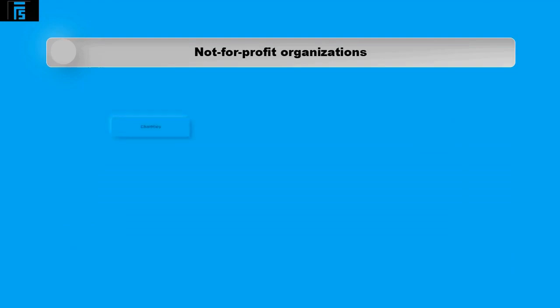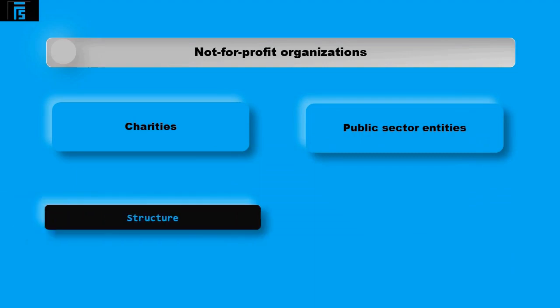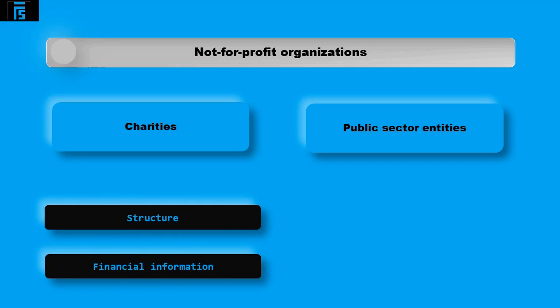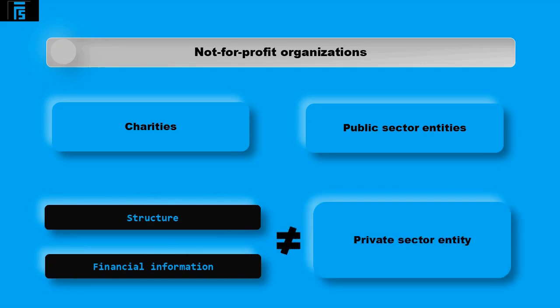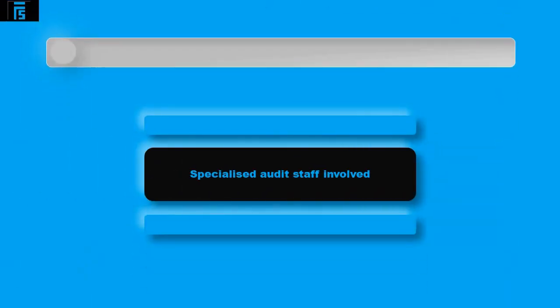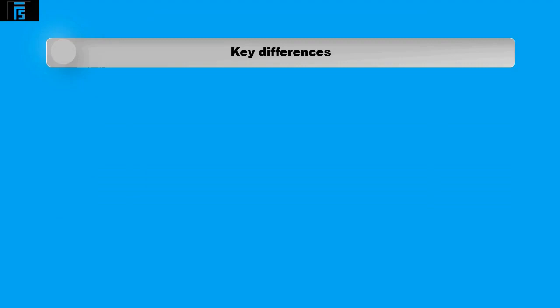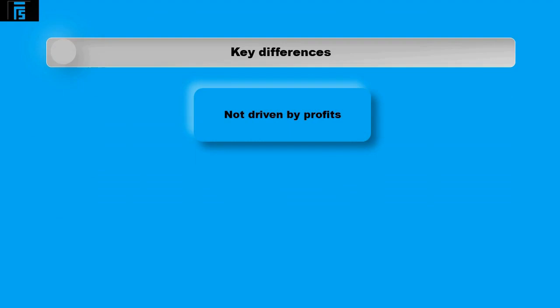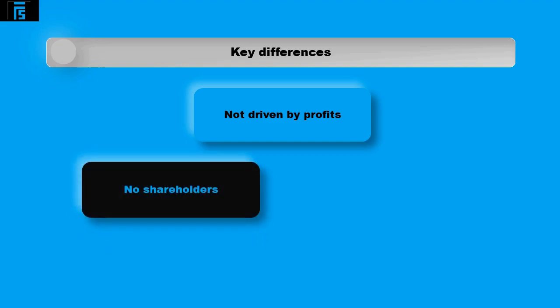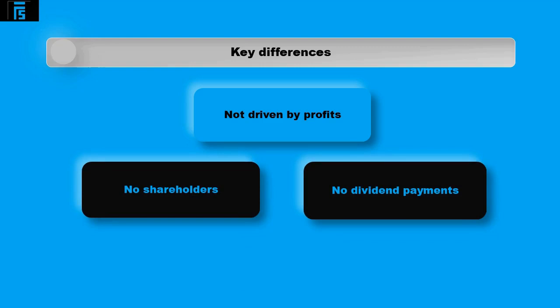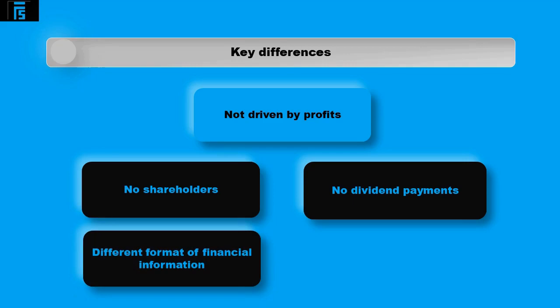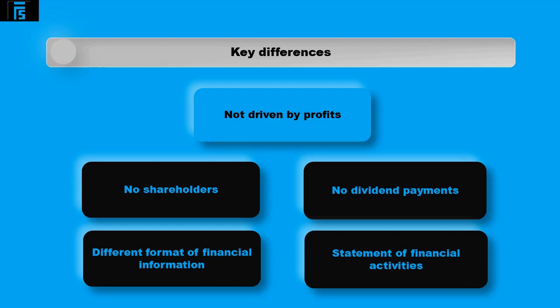Not-for-profit organisations include charities and public sector entities. How these entities are structured and how they prepare their financial information will be significantly different to a private sector entity. Key differences include: they are not driven by profits — their objective may be to provide a service rather than make money; they will not have shareholders; there will be no investors looking for a return or dividend payments; and the format of financial information will be different — a charity would prepare a statement of financial activities, formatted differently to a statement of profit and loss.